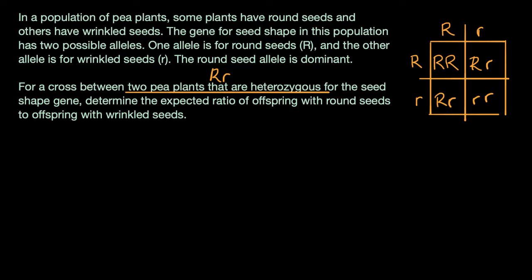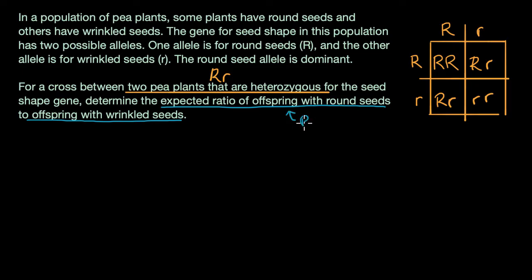Now they're not asking us about genotypes. They're saying: determine the expected ratio of offspring with round seeds to offspring with wrinkled seeds. So what does the genotype have to look like to have round seeds? Remember, the round seed allele is dominant. You could be capital R, capital R, but since it's dominant you could also be capital R, lowercase r and still have round seeds. The only way you're going to have wrinkled seeds is if you are homozygous for the wrinkled seed allele — that is the only wrinkled seed scenario.